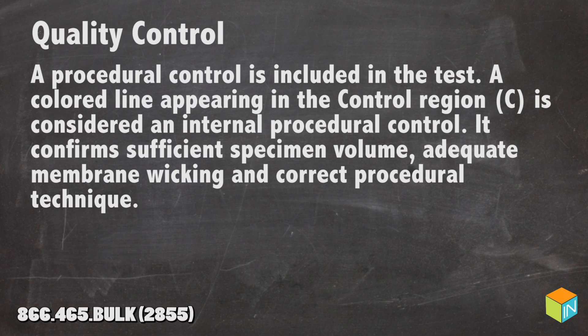Quality Control: A procedural control is included in the test. A colored line appearing in the control region is considered an internal procedural control. It confirms sufficient specimen volume, adequate membrane wicking, and correct procedural technique.